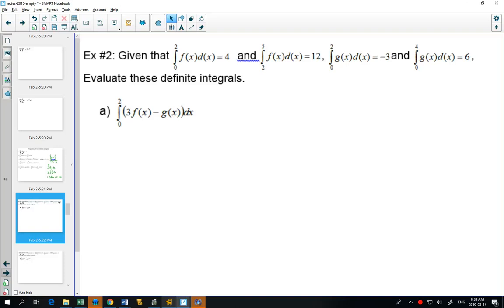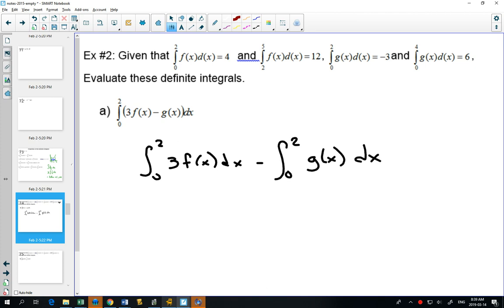Can we use the properties to figure out this one? Well, adding and subtracting means that we could break this up to be 0 to 2 of 3 f of x dx minus 0 to 2 of g of x dx. So that's one of our properties. If we're adding or subtracting, we can break it up. And what's really nice is, I'm going to put a check mark by this one, that's one of the ones we have already.